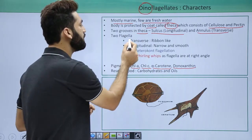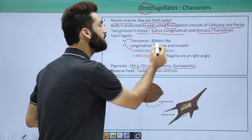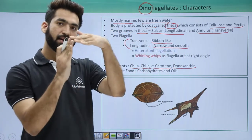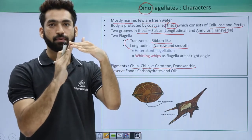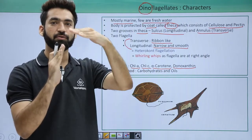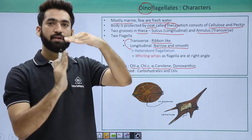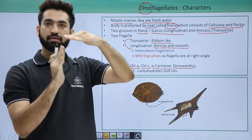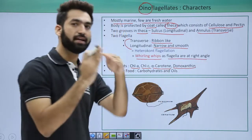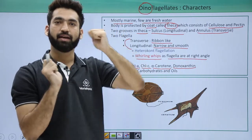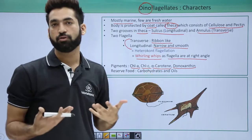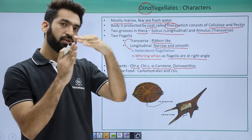There are two types of flagella — 'dino' means two, 'flagellates' means flagella. One flagellum is transverse, which is ribbon-like, and one is longitudinal, which is narrow and smooth. These two flagella remain at 90 degrees to each other, and because of this they produce a spinning movement. Due to this spinning motion, dinoflagellates are also called whirling swimmers.